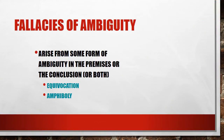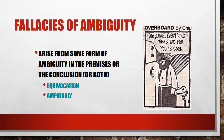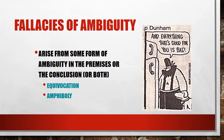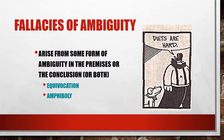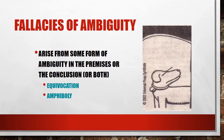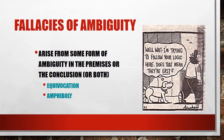Now, fallacies of ambiguity occur when there's some sort of ambiguity — multiple legitimate meanings — in the premises or conclusions. These cover fallacies of equivocation and amphiboly. For example, everything that's bad for you is good, and everything that's good for you is bad — it looks like good and bad are being swapped out for their meanings. Diets are hard, making Louis justifiably confused when he asks whether easy and hard are equivalent as well.